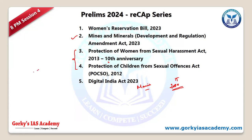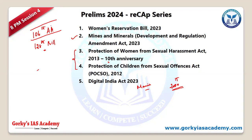Regarding the Women Reservation Bill — can anyone give the constitution amendment number? It is the 106th Constitutional Amendment Act. In case they ask for the bill number, it is the 128th bill. Remember: bill number is 128th, whereas the Constitution Amendment Act number is 106. The date is not that important.